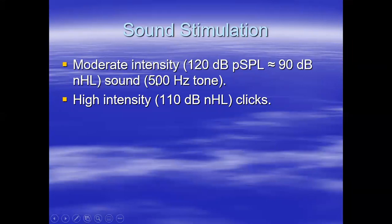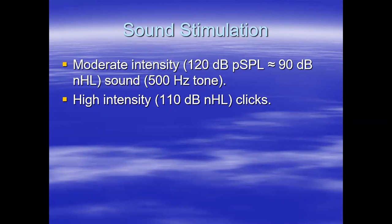You can use this sound intensity if you have the ability to stimulate at specific frequencies. There are dedicated VEMP systems on the market, but if you have a brainstem auditory evoked potential system in your laboratory, you can do vestibular evoked myogenic potentials on that as well — you do not necessarily need to buy a separate VEMP system. If you have a tone of 500 Hz, 90 dB above hearing threshold is sufficient. If you only have click stimulation, you need to go higher — to 110 dB.